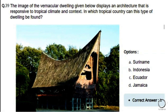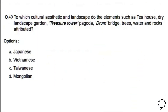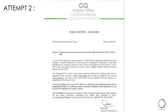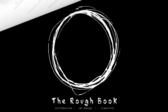Last question: To which cultural aesthetic and landscape do elements such as tea house, dry landscape garden, treasure tower, pagoda, drum bridge, trees, water and rocks belong? Options: a) Japanese, b) Vietnamese, c) Javanese, d) Mongolian. The right answer is option A — Japanese. That brings us to the end of the video. I hope this was helpful for your attempt, which is now postponed to July 11th. Use this extra time wisely — see you!